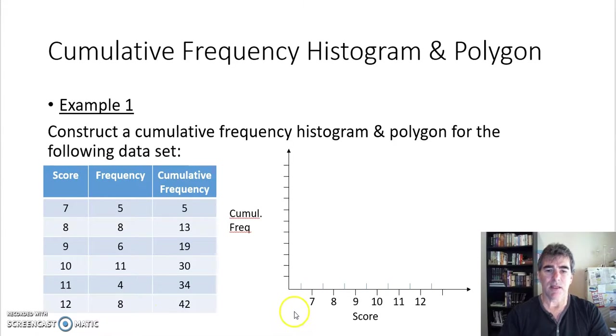Well, we need our horizontal axis, which is our scores 7 through to 12. And again, you notice I've gone one extra just in case, and I'll put my half marks in where each column starts and finishes. And my cumulative frequency is my vertical axis, but I've got to be careful. My highest value in here is 42.